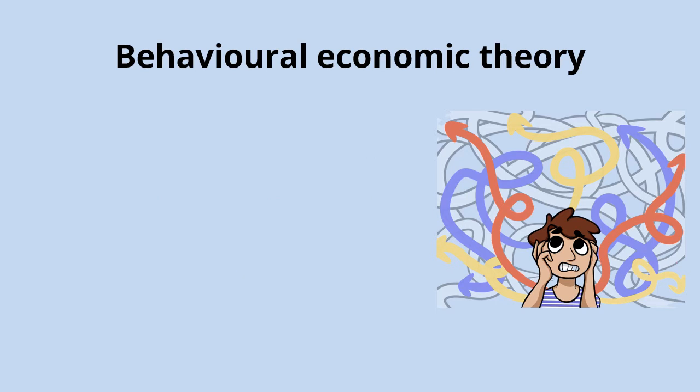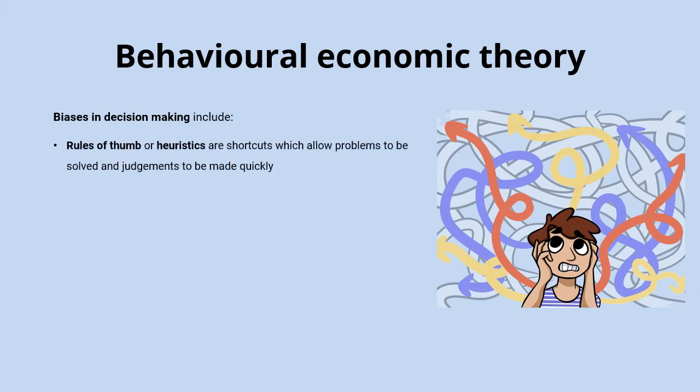There are a range of other behavioural biases with a significant effect on decision making. Rules of thumb, or heuristics, are shortcuts which allow problems to be solved and judgments to be made quickly, even if it doesn't always lead to the most rational course of action. When shopping, you might look for products on offer — those red labels — and it's not always the best deals, but you don't always have time to check the price per gram so you purchase those more commonly.